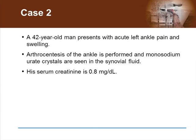What is the best treatment for this patient's acute gout attack? A, oral corticosteroid. B, oral colchicine. C, oral NSAIDs, or non-steroidal anti-inflammatory drug. D, intra-articular corticosteroid injection. Or E, all of the above.